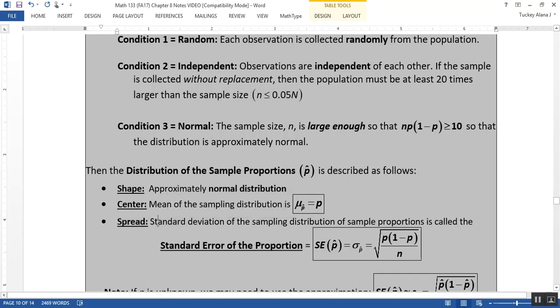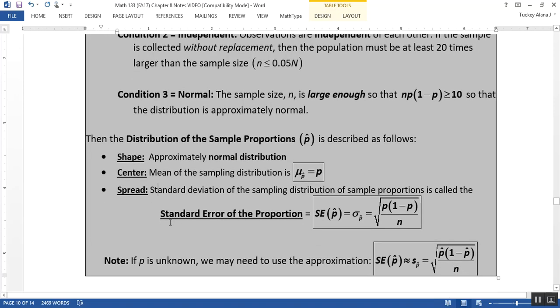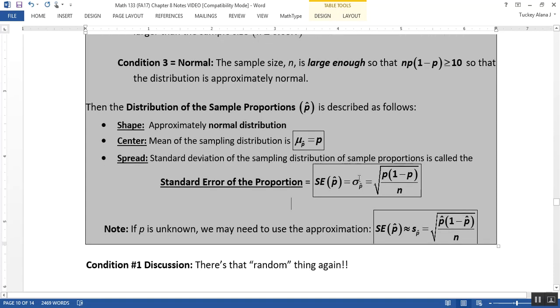The spread is the standard deviation of the sampling distribution of sample proportions. That's a lot of words, so they changed it to standard error. Standard error is the easier name for the standard deviation of the sampling distribution of sample proportions. It's abbreviated sigma sub p-hat and has this formula: the square root of p times (1-p) all divided by n.